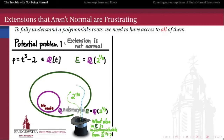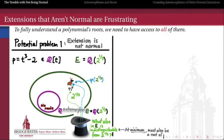Specifically, what else in E will behave exactly the same way that 2^(1/3) does? If φ is an automorphism of E over ℚ, then φ(2^(1/3)) must also be a root of the polynomial t³ − 2. We can see this by cubing φ(2^(1/3)) and using the fact that φ is an automorphism: since φ fixes ℚ, φ(2) must equal 2. Therefore, φ(2^(1/3)) cubed minus 2 equals 0, meaning 2^(1/3) is a root of p, and φ(2^(1/3)) must also be a root of p.